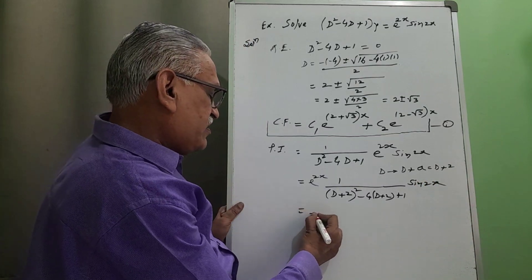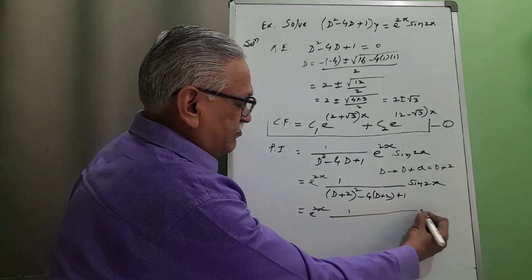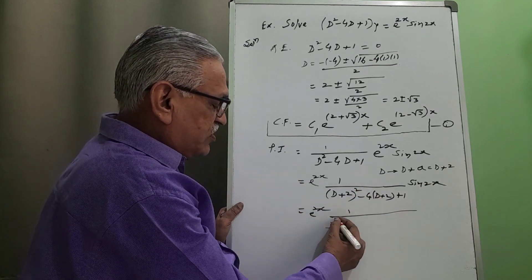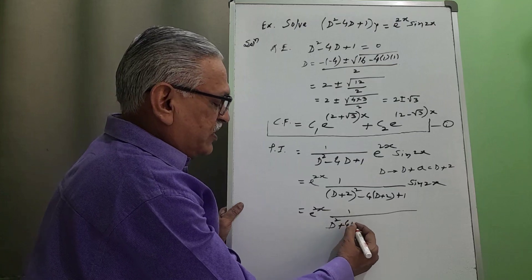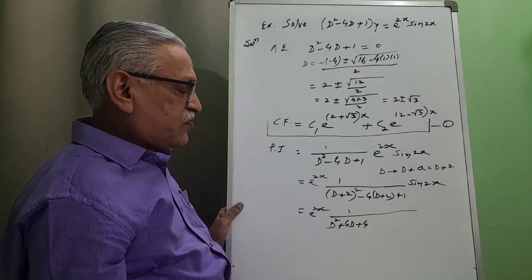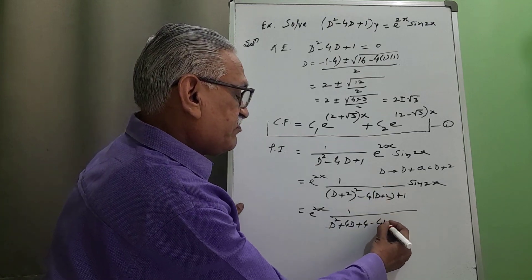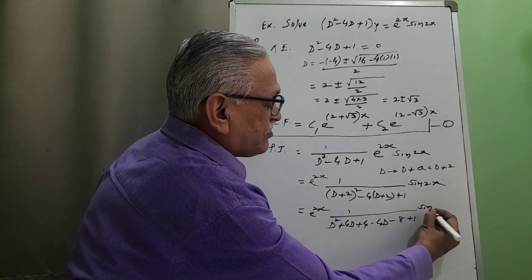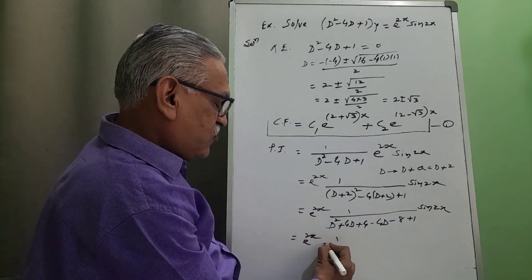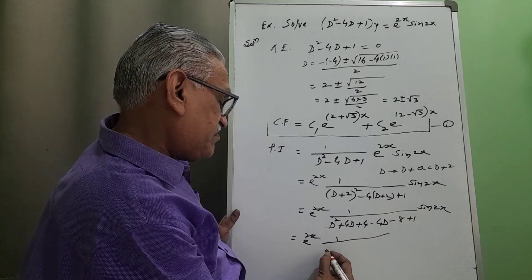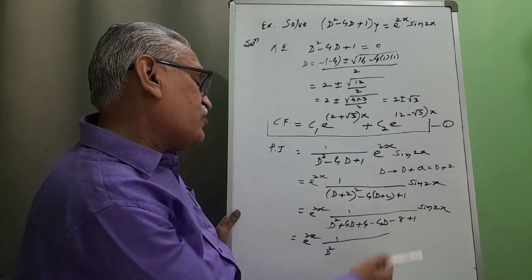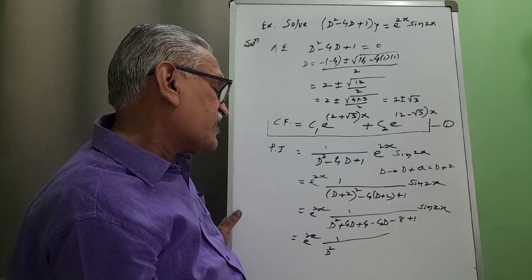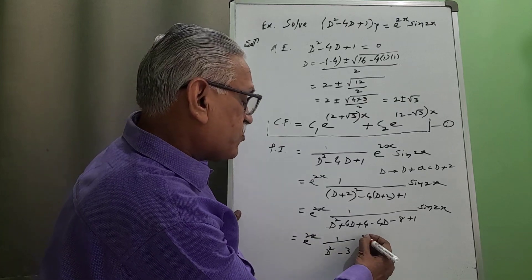Simplifying, we get e raised to 2x times one over the expanded expression. Expanding each and every term: (D plus 2) squared gives D squared plus 4D plus 4; then minus 4D minus 8; and plus 1. The 4D and minus 4D cancel. We get D squared plus 4 minus 8 plus 1, which gives D squared minus 3, operating on sine 2x.